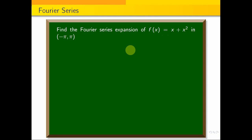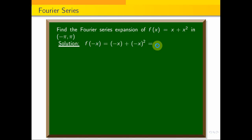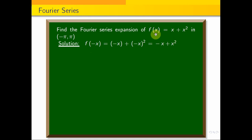This is the problem. If we know minus pi to pi, we will check the nature of the function. f of minus x is equal to minus x plus x square. Even function means f of minus x is equal to f of x. If x is equal to minus x, this function is even. But minus x is equal to minus x plus x square, so the function is neither even nor odd.